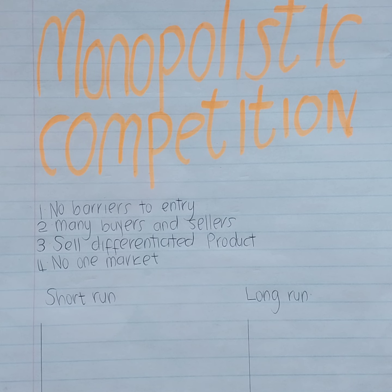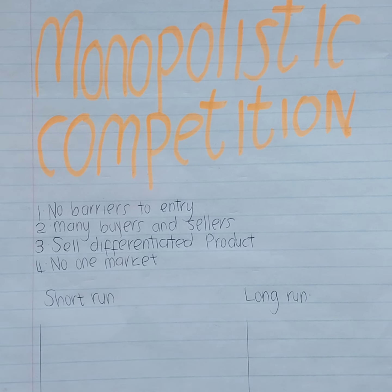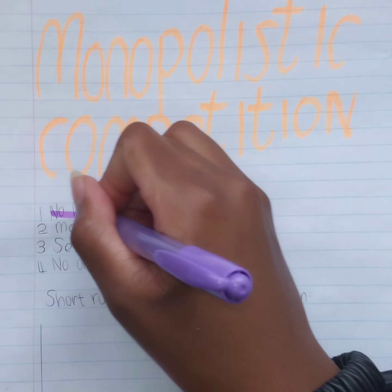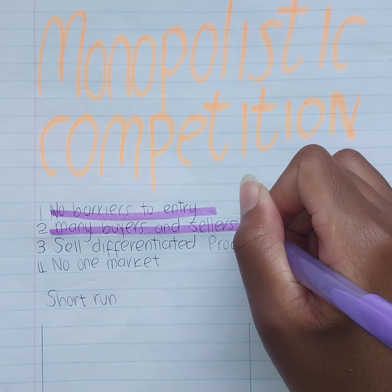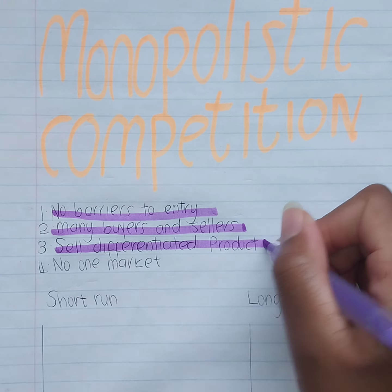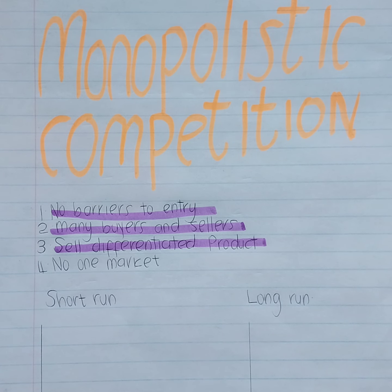In this market structure there are no barriers to entry and exit, so firms can enter and leave as they wish. There are many buyers and many sellers. The suppliers actually sell similar products — they are differentiated but they are not the same.